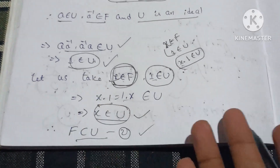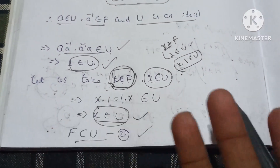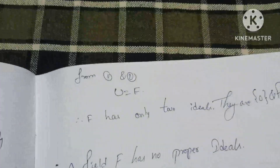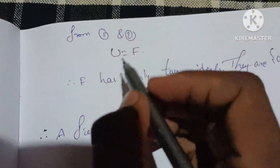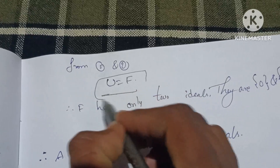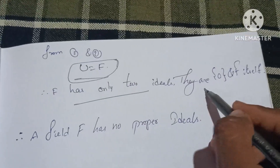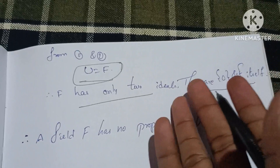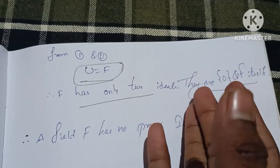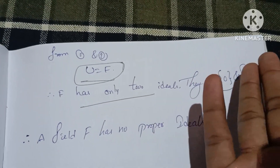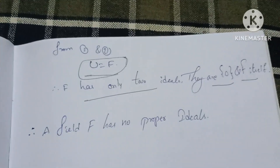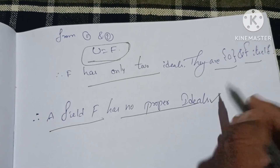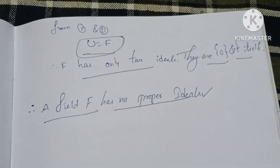From equations 1 and 2, U equals F. Therefore the field has no proper ideals — F has only two ideals, which are 0 and F itself. This is the solution.